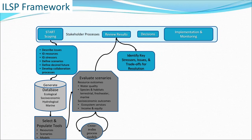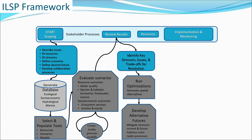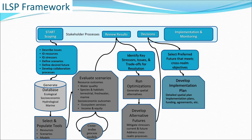We take these results back to stakeholders and review the results of the scenario evaluation. From there, we identify key stressors and issues and identify trade-offs for resolution. Part of the framework entails running optimizations that can generate spatial alternatives, and then developing alternative futures that can mitigate stressors both currently and in the future. Going back to the stakeholders, decisions need to be made — selecting the preferred alternative that meets the cross-realm objectives, which are also cross-organization and cross-community objectives. Then we develop an implementation plan from the preferred alternative.